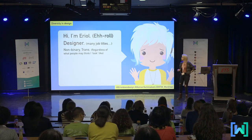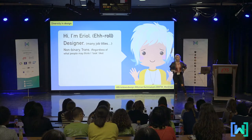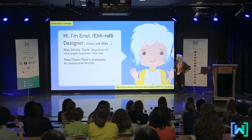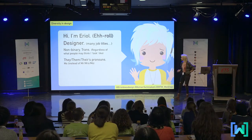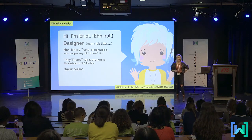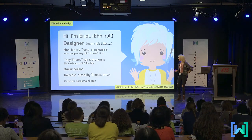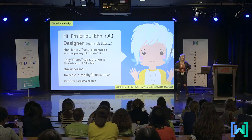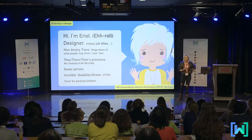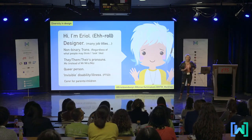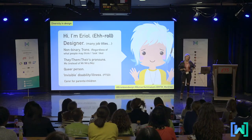I'm a non-binary person. I'm trans, regardless of what people think I may look like. That means my gender is neither male nor female — it's somewhere in between, it's fluid. I use they/them/their pronouns, and I use the title Mx instead of Mr., Mrs., or Miss. I'm a queer person, part of the LGBTQ+ community. I have an invisible disability — I have PTSD. I'm a carer for sick parents and children as well. I find it really important to include all these different things that we embody as people as well as our jobs, because these things can really inform the kinds of products that we create and make them a lot better.